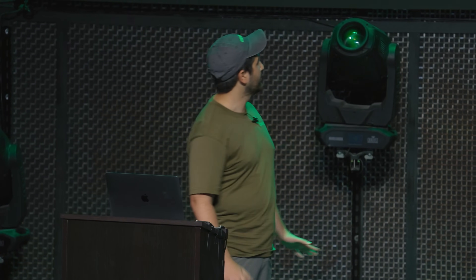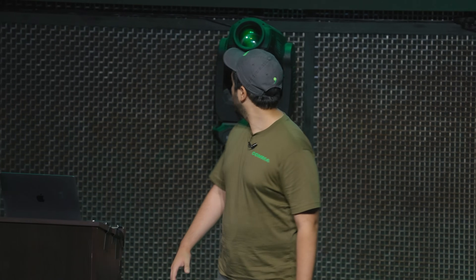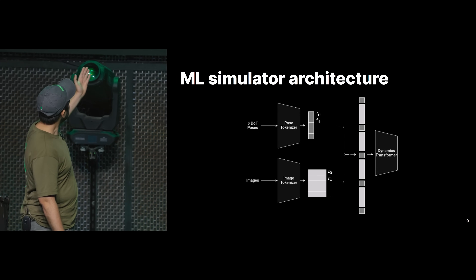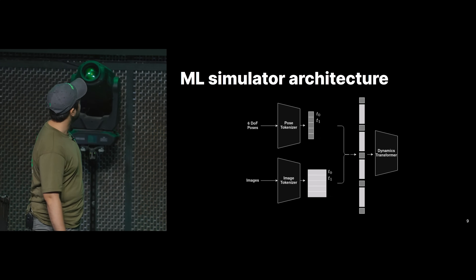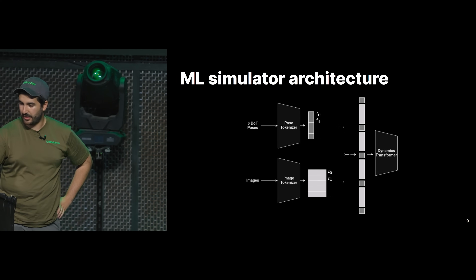So what's an ML simulator? An ML simulator has basically three components. I'm going to go into each component separately and explain what it does — by the end we'll go back to our first slide. The three components are: an image tokenizer, a pose tokenizer, and the dynamics transformer.